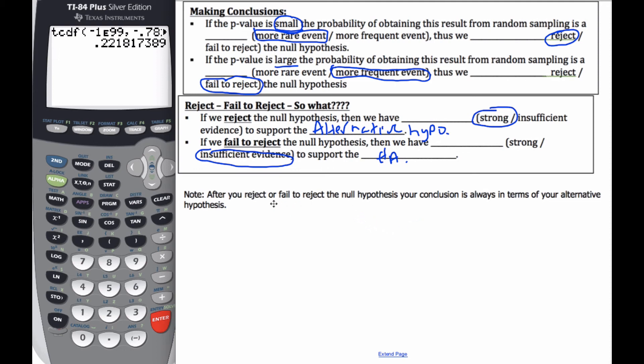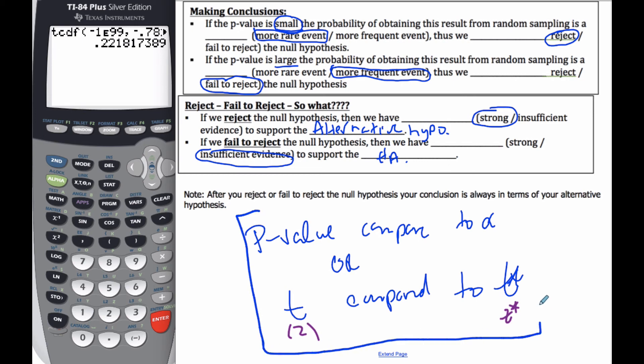So when you make a conclusion, you always have to make the conclusion with the p-value compared to alpha, to the alpha value, or the t value compared to t-star. And remember this could be z as well compared to z-star. But so you make this initial statement with these two about the null hypothesis, but then you give your conclusion in terms of the alternative hypothesis, whether you support it, whether there's evidence to support the alternative or not support it.